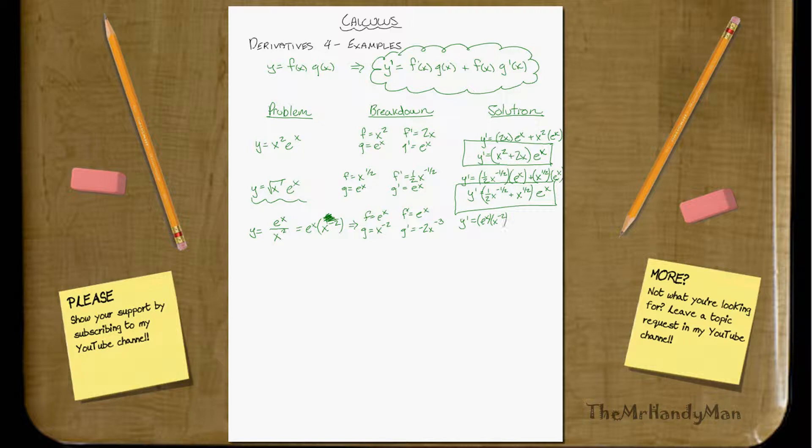Plus, sorry, there's a little bit, I'm going to drop down to the next line here, e to the x times g prime, which is negative 2x to the negative 3. So y prime is equal to x squared minus 2x to the negative 3, all e to the x power.